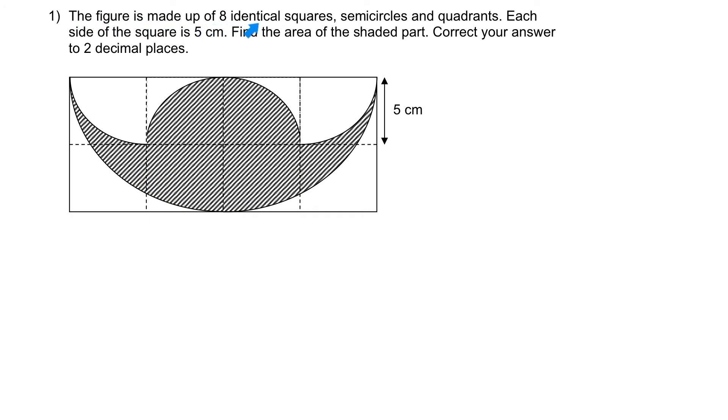The figure is made up of eight identical squares, semicircles and quadrants. Each side of the square is 5 cm. Find the area of the shaded part. Correct your answer to two decimal places.